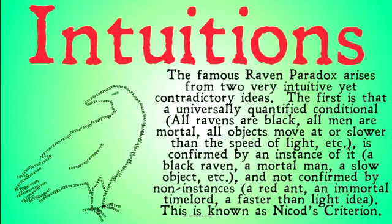The famous Raven Paradox arises from two very intuitive, yet logically contradictory ideas. Carl Hempel proposed this paradox and demonstrated that these very intuitive ideas are, in fact, logically contradictory. The first is that a universally quantified conditional — 'all ravens are black,' 'all men are mortal,' 'all objects move at or slower than the speed of light' — is confirmed by an instance of it.